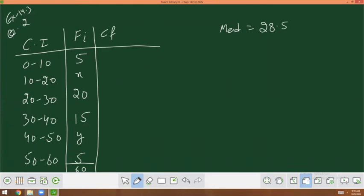Firstly you find out the CF. CF is 5, then 5 plus x. Because we don't have to add a constant and variable, we write 25 plus x as it is. Similarly, it is 40 plus x.